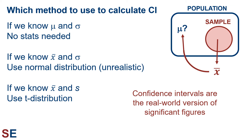Lots of people learn about significant figures in science classes and how the number you report is an indication of how sure you are about the correct answer. Significant figures are really a form of shortcut and a casual way to represent the uncertainty in an answer. In the real world of science, it's confidence intervals that are used to indicate uncertainty, not significant figures.